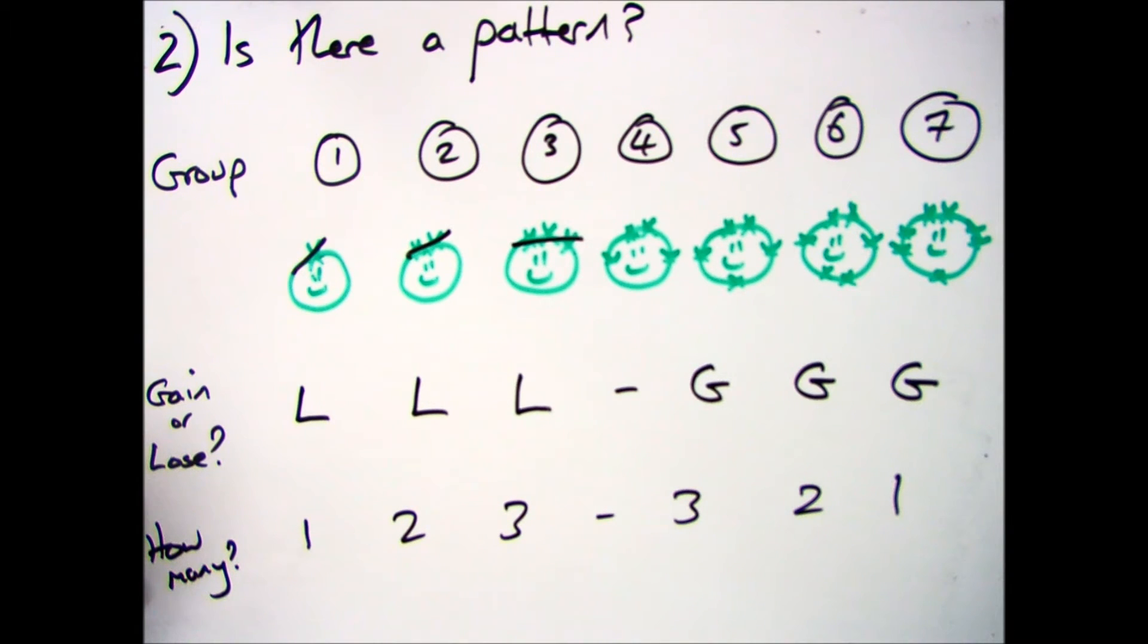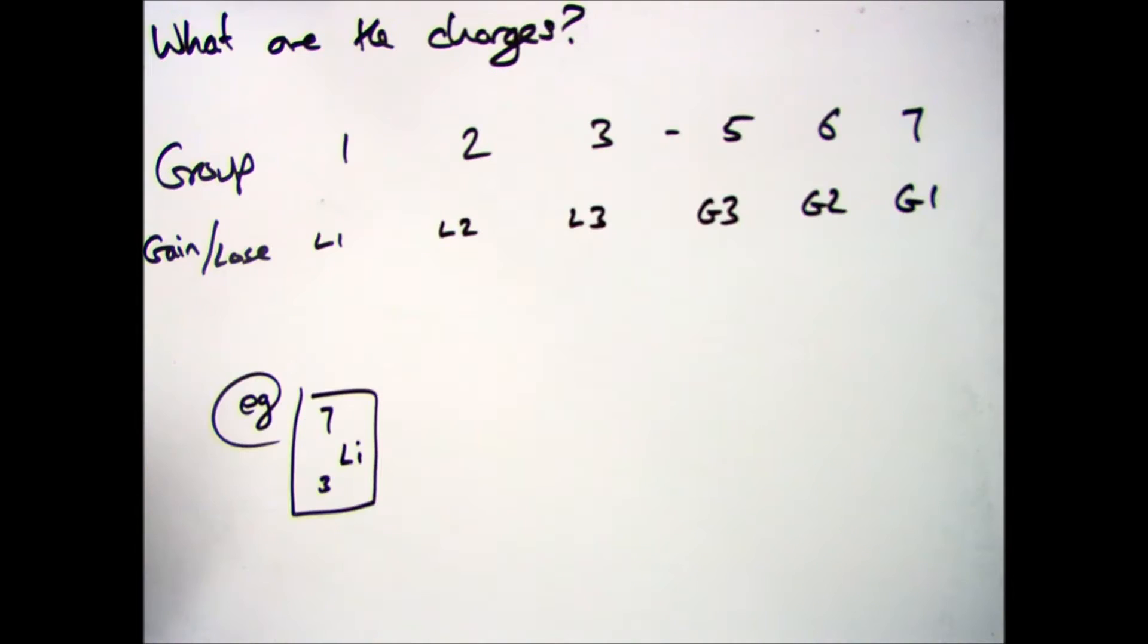Now you will notice that I haven't put anything for group 4 in both these situations. The reason for that is group 4 elements can either gain or lose, and that will change depending on whether they are metal or non-metal. But you won't be asked that in the exam.